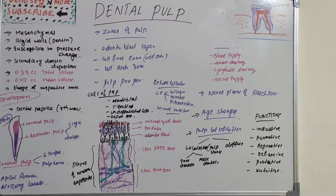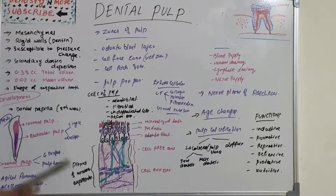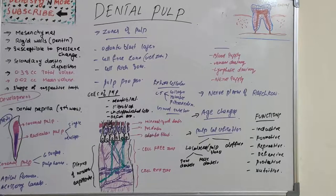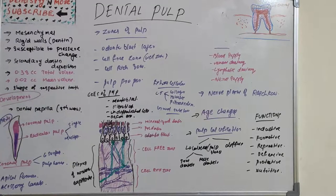In the oral cavity we have 52 pulp organs — 32 of permanent teeth and 20 of primary teeth. The total volume is 0.38 cc and the mean volume is 0.02 cc. Each pulp organ takes the shape of the tooth it occupies, so a central incisor pulp will be shaped like a central incisor, and a molar pulp will be smaller, taking the shape of the molar.